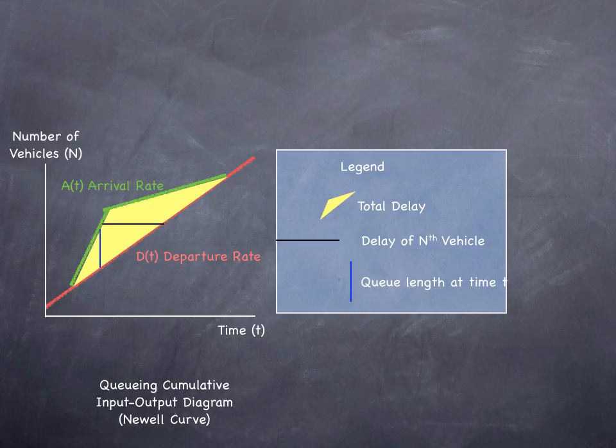In this case, we're assuming that the departure rate is uniform. It's a straight line. The same number of vehicles depart every minute, or every hour, or every second.